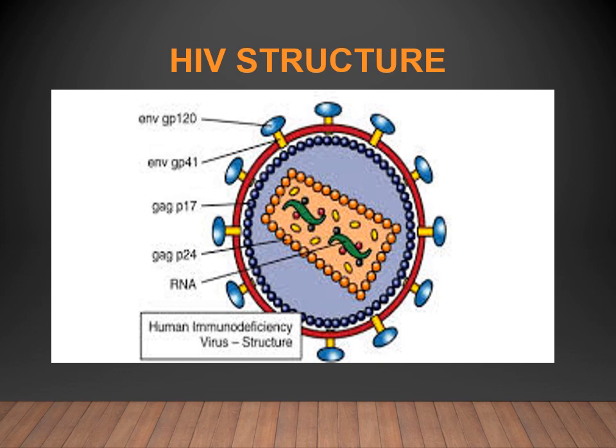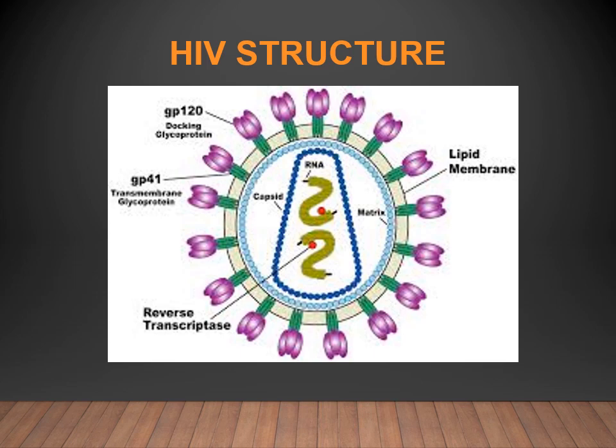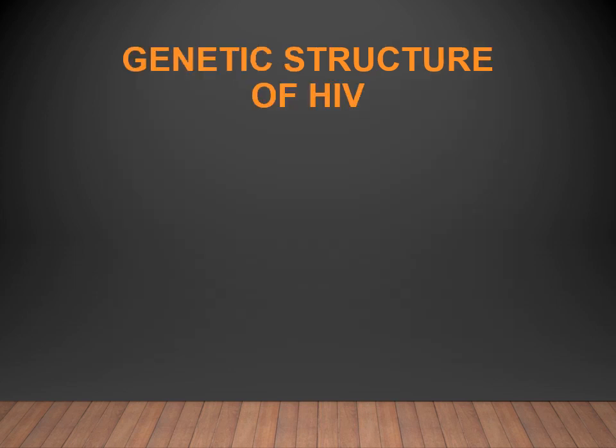This diagram shows the HIV structure. It is spherical in shape. The envelope protein has two components: glycoprotein 120, visible as a knob-like structure, and glycoprotein 41, the transmembrane protein. Within the virion, there is a rectangular core protein containing two copies of RNA and the enzymes. Surrounding the capsid is the matrix protein.